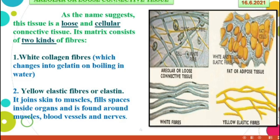Look at this picture. The white fibers present in the connective tissue — this is collagen, made up of some special kind of proteins. It is called white collagen fibers. When put in boiling water, it changes into gelatin.